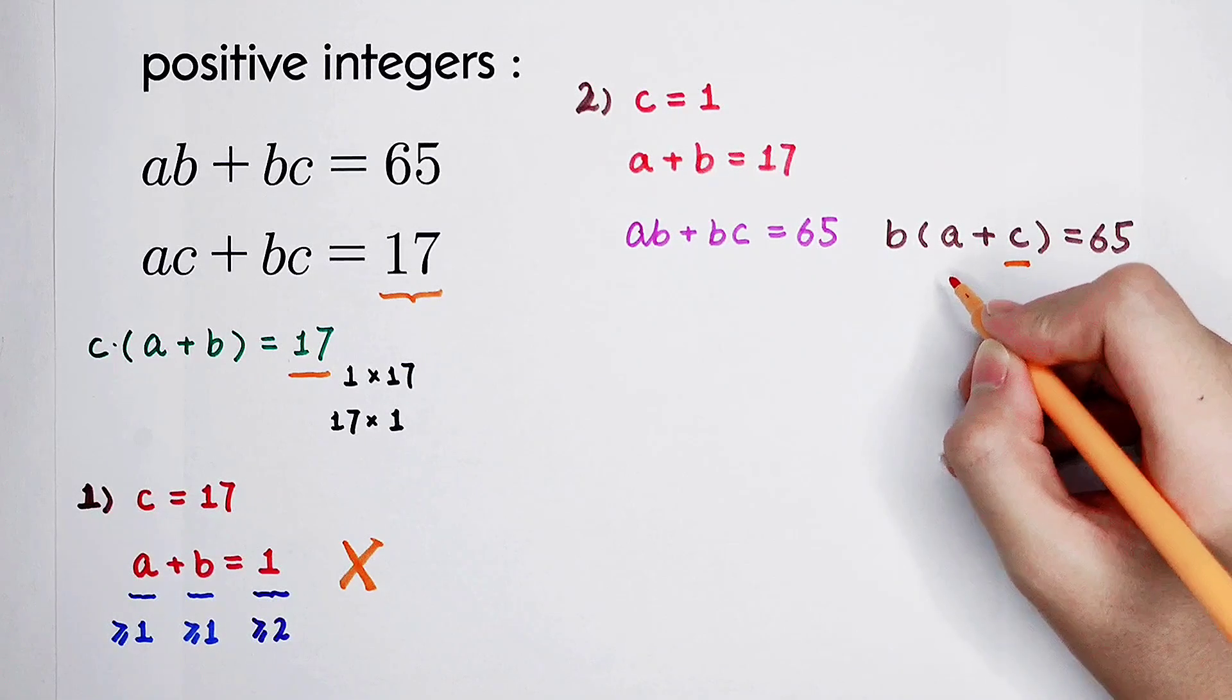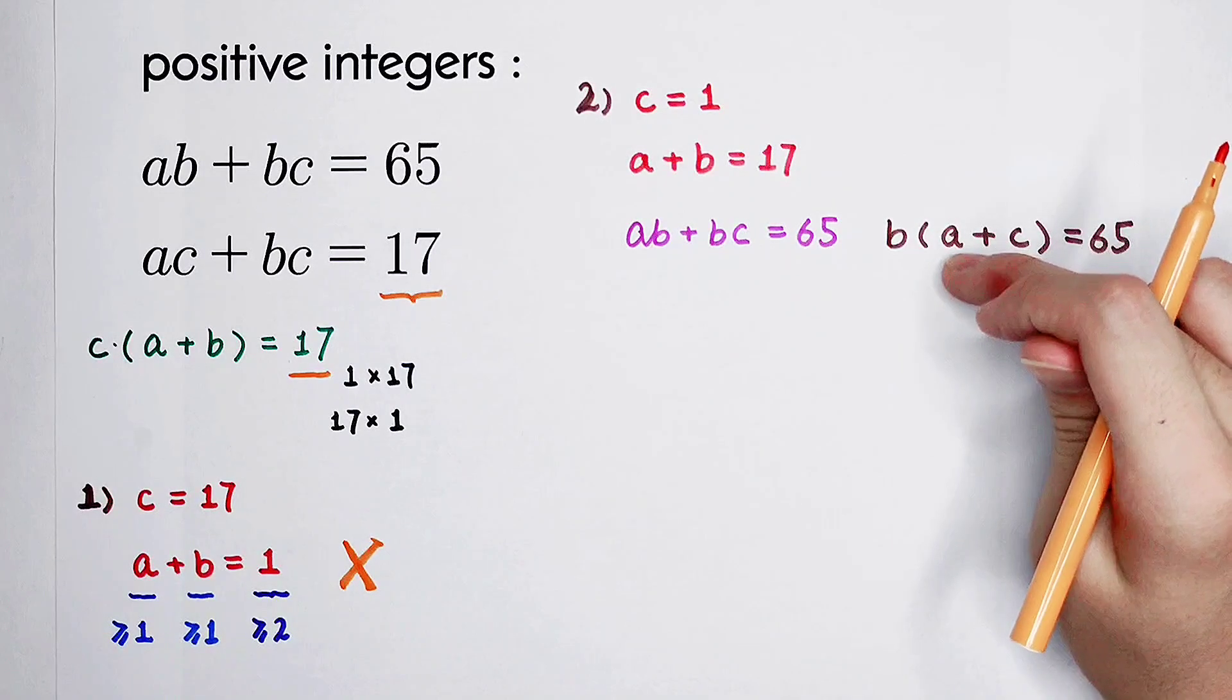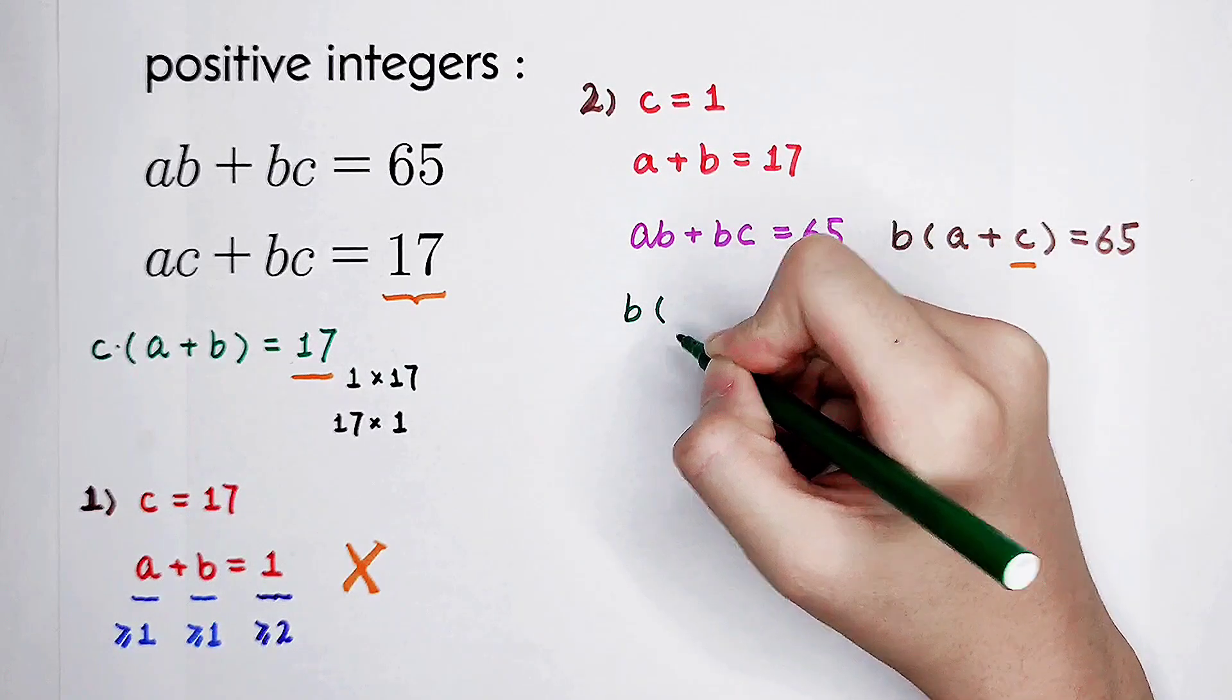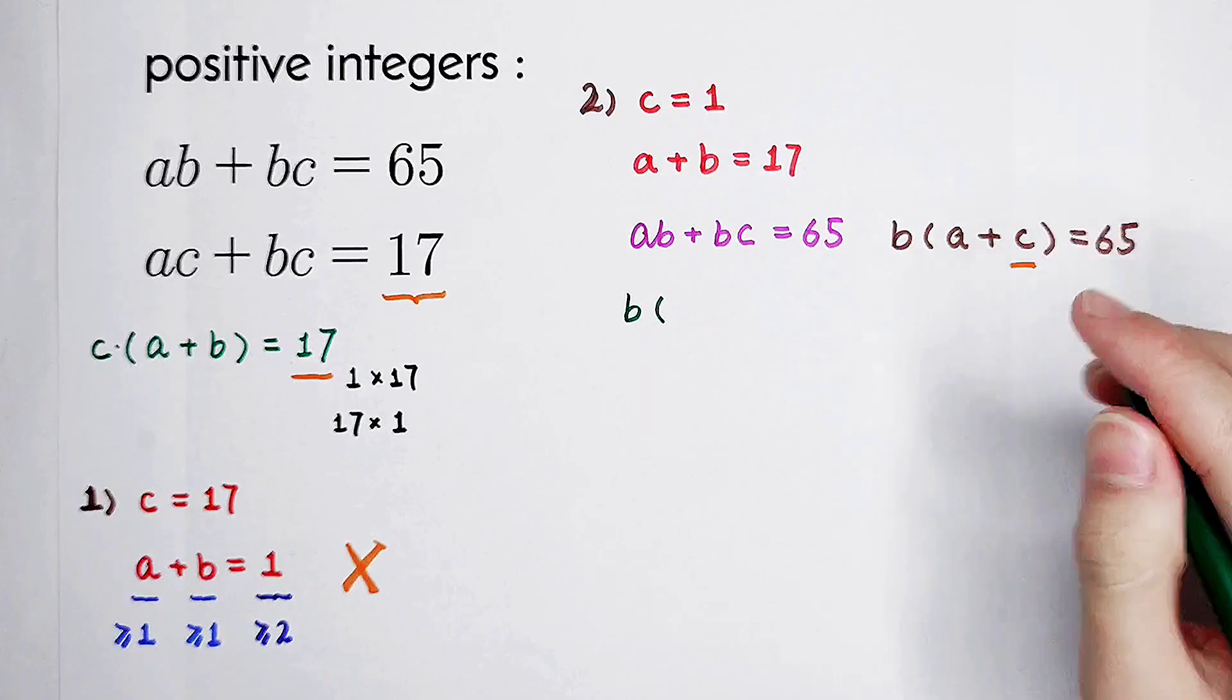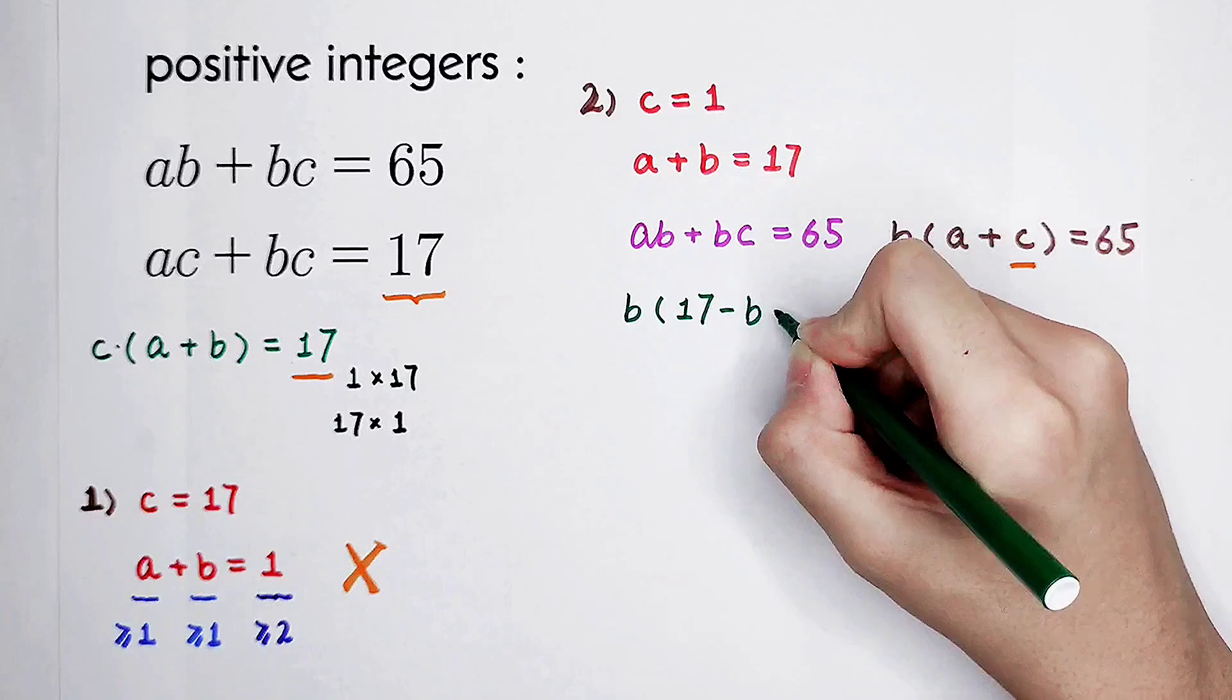Of course, a plus b is equal to 17. So a is 17 minus b. So now, b times a is 17 minus b, and c is 1.